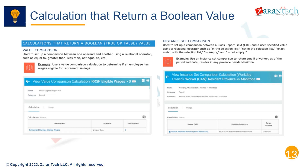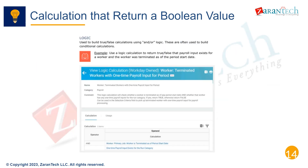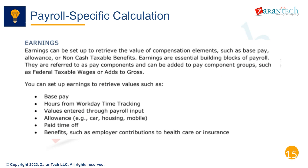Boolean, or true/false, calculations return a simple yes or no value. These are useful for determining eligibility, status flags, and more. For example, we may check if an employee's job profile is Sales to determine if they qualify for a sales bonus, or verify if the hire date was over one year ago to grant PTO. Boolean calculations allow payroll to apply rules consistently across the organization.